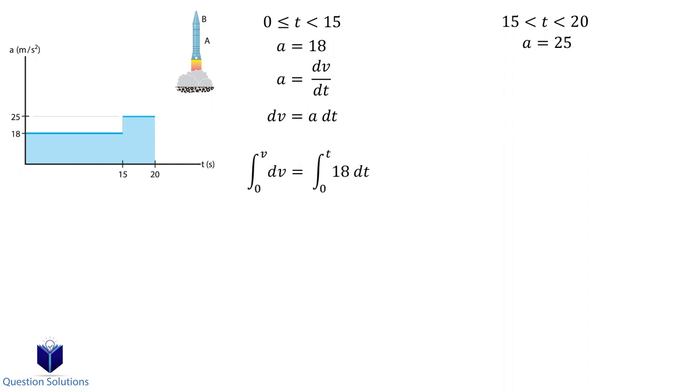Since the missile starts from rest at a time of 0, the lower bounds for our integration are 0. When we integrate and simplify, we get v equals 18t. Now we need to calculate the velocity at 15 seconds before we do the integral for the next segment. Substituting 15 into our equation gives us 270 meters per second.